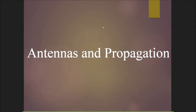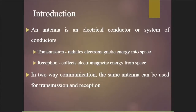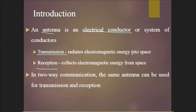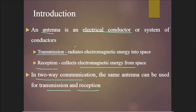Let's talk about antennas and propagation. An antenna is an electrical conductor or a system of conductors. For transmission, the antenna radiates electromagnetic energy into space; for reception, it collects electromagnetic energy from space. In two-way communication, the same antenna can be used for both transmission and reception.